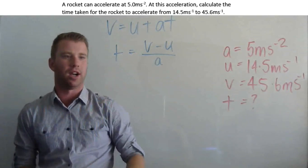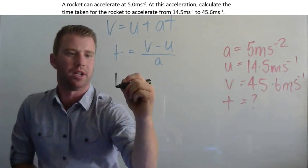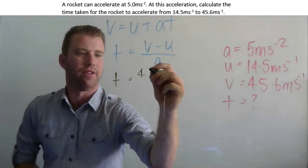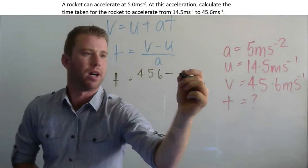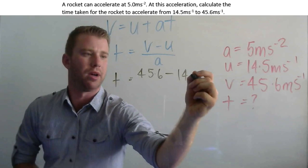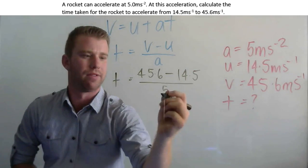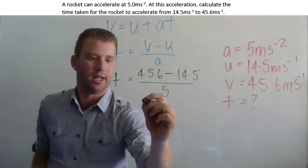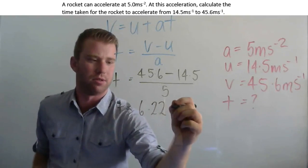Finally, we're going to put in the variables we know from the question. We don't know time, that's what we're finding. So t equals 45.6 minus 14.5 all over 5. Plug that into your calculator and you get 6.22 seconds.